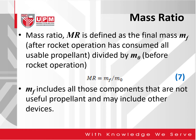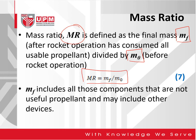The mass ratio is basically denoted by the symbol MR. It is defined as the final mass M subscript F — which means after the rocket operation has consumed all usable propellant — divided by M0, which is the mass before the rocket operation. Note that MF includes all those components that are not useful propellant and may include other devices.